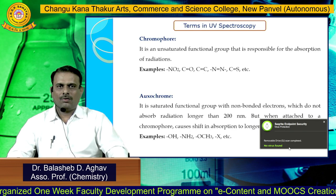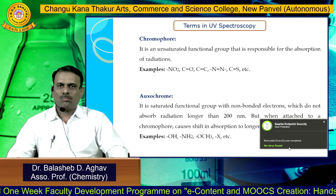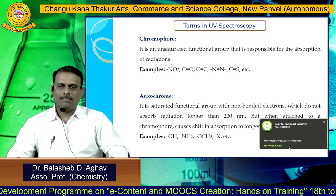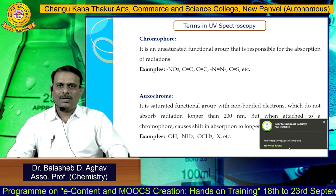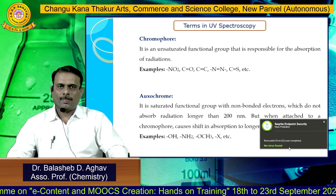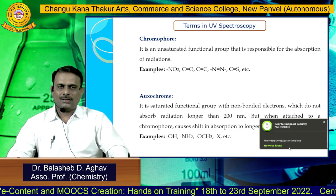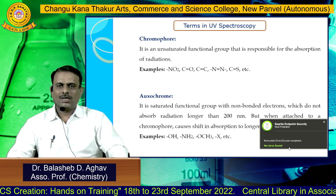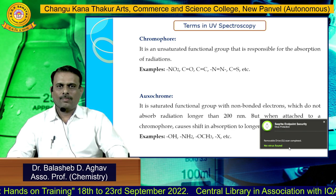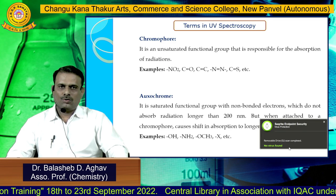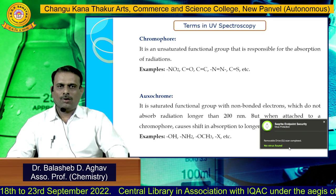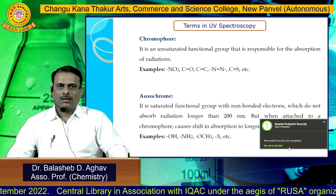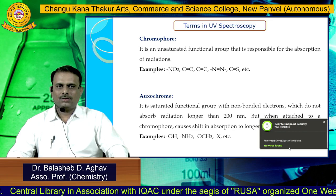An important term in UV spectroscopy is chromophore. The word chromophore is derived from 'chroma' meaning color and 'phore' meaning bearing — those groups that bear color are called chromophores. Unsaturated functional groups responsible for absorption of radiation are chromophores, for example nitro group, carbonyl group, carbon-carbon double bond, azo group, and thio group.